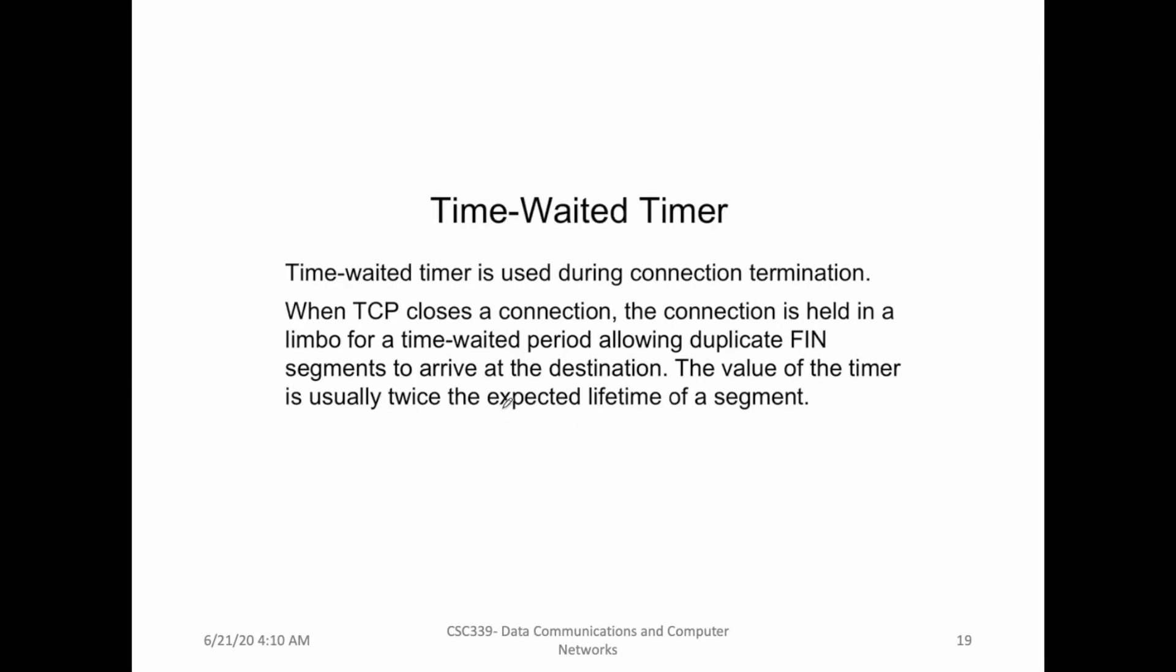And then the last timer is called time-wait timer. This time-wait timer is used to terminate a connection. Whenever we have to terminate a connection, TCP sends a connection close request. The connection is held in limbo for time-wait period allowing the duplicate FIN segment to arrive at the server side. The value of the timer is usually twice the expected lifetime of a segment. So upon receiving the duplicate FIN, we wait for time-wait timer.